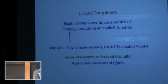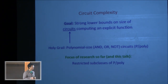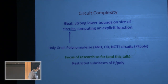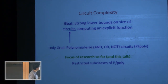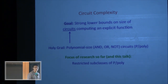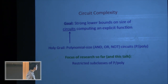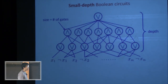What do we mean by circuits? The holy grail is to understand the class of polynomial size OR-AND-NOT circuits, also called P/poly. But we are still very far from understanding this class — this would separate P from NP. So the focus of research so far, and of this talk, is on restricted subclasses of P/poly, specifically the class of small depth Boolean circuits.